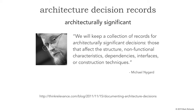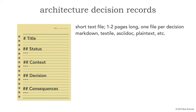Let me show you how powerful an architecture decision record can be, but let's define them first. These are the basic sections that Michael Nygaard has defined within an architecture decision record. An architecture decision record is a short text file, usually one to two pages long, that contains only one decision. Each architecture decision you make would have a corresponding architecture decision record, or ADR.